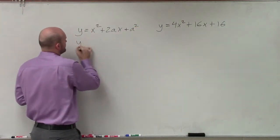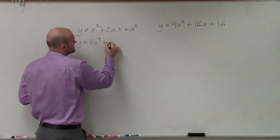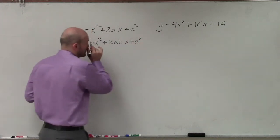But now, if I have a coefficient, then that's going to be like a bx squared. And now it's going to have to be 2 times a times bx plus a squared.